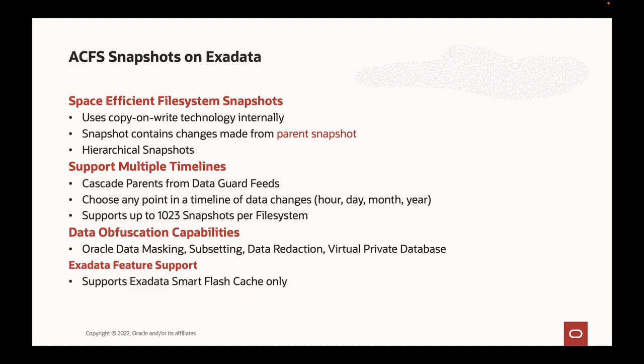ACFS snapshots are a file system level snapshot of a database inside ACFS. One of the key differences between Exadata Sparse clones and ACFS snapshots is that my database has to be in ACFS to use ACFS snapshots, whereas for Sparse clones it has to be on ASM. I can't mix the two — I can't have a database in an ASM disk group in data and create an ACFS snapshot. The parent always has to be inside the technology you want to use.